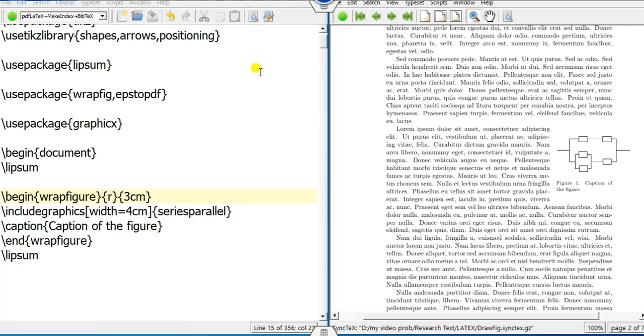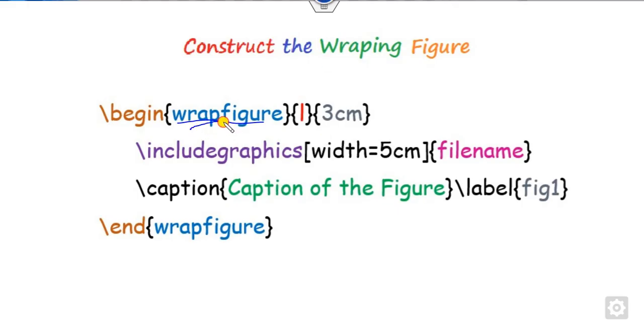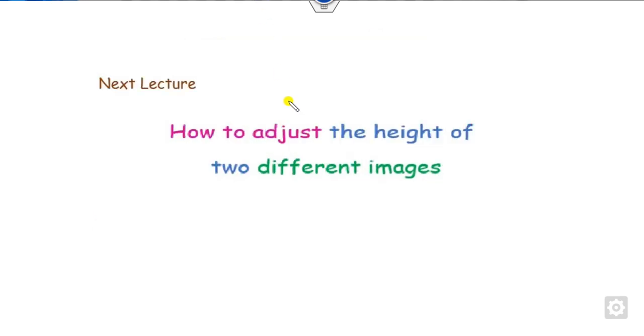So this is a simple way you can wrap a figure by using wrapfigure. We will see in our next class how we can adjust the height of two different images in the LaTeX document.